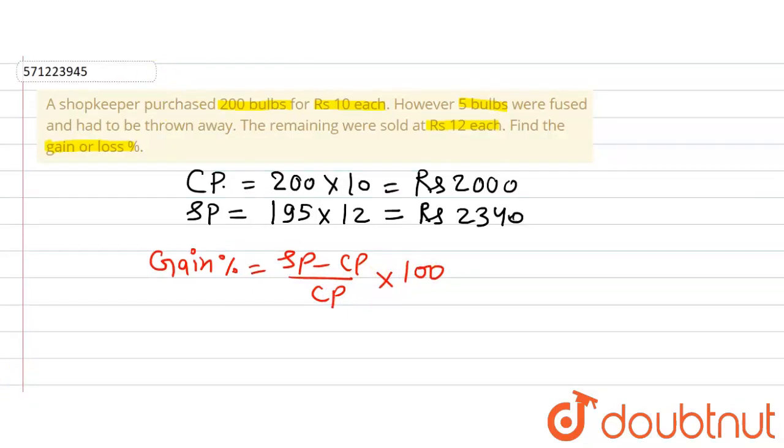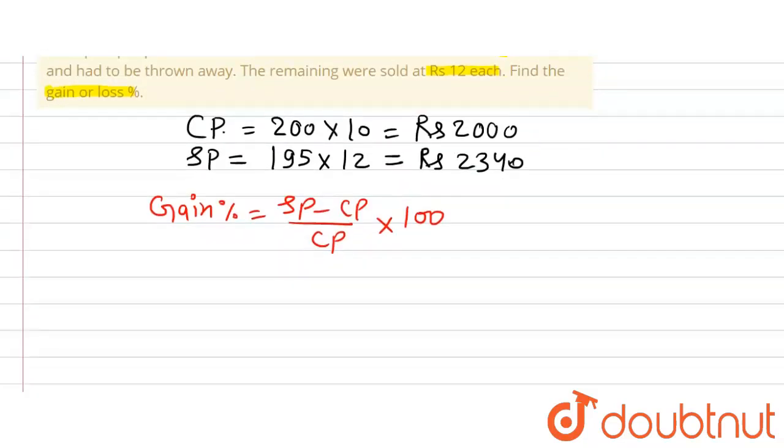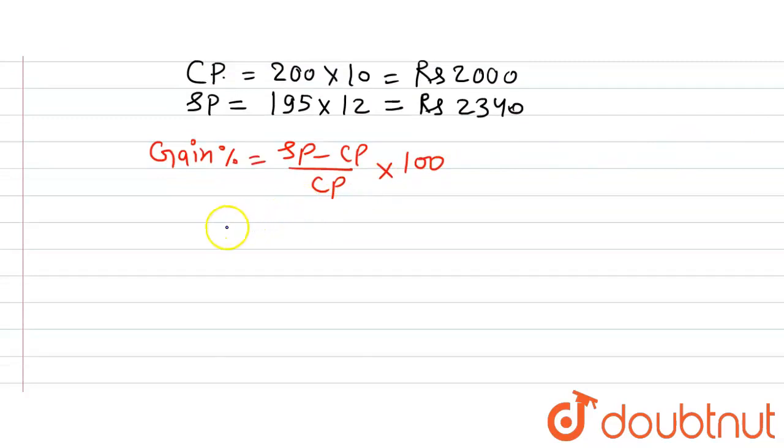So let's put in the value of SP and CP and find the gain percent. Putting in the values, gain percent will be equal to, SP that is selling price is 2340 minus CP is 2000, divided by CP which is 2000, multiplied by 100. This will give us the gain percent.